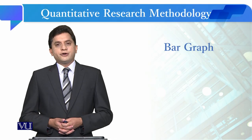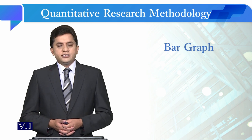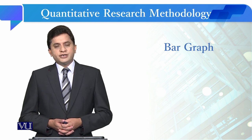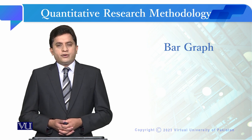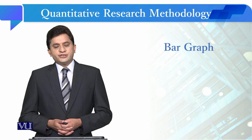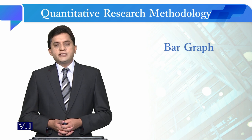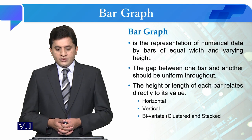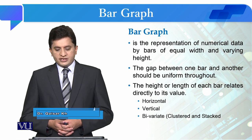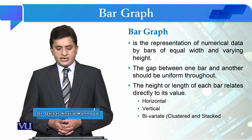Students, now we are going to talk about bar graphs. In previous modules, we talked about the pie chart and now we are going to study bar graphs. The bar graph is somehow different from the pie chart on two bases: one is the illustration is different, and the other is we are going to use a nominal variable or an ordinal variable. The pie chart uses just a nominal variable. Bar graph is the representation of numerical data by bars of equal width and varying height.